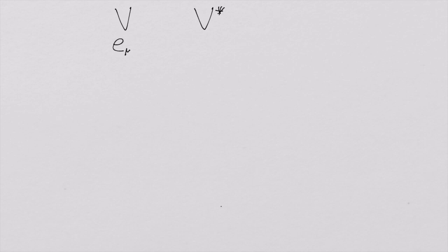We're going to do our work about linear transformations and apply them to tensor spaces. We start with our vector space, as always, but we have to remind ourselves that we have the dual space out there. The vector space has a basis E_μ, and the dual basis is given by E^ν, and the relationship is, as always, E^ν(E_μ) = δ^ν_μ.